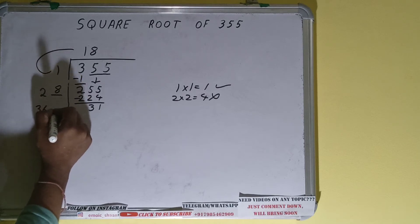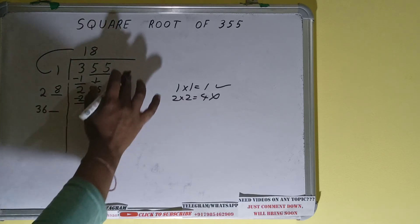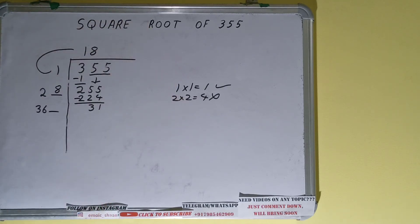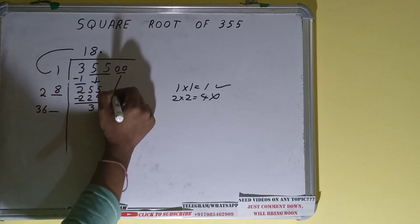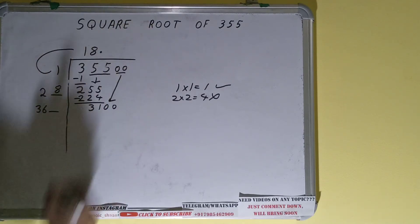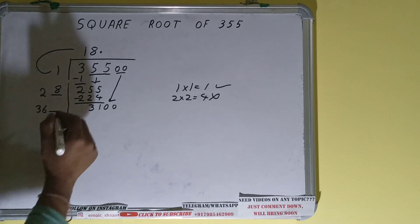Now 28 into 8 we did, so add both. 28 plus 8 will be 36, and keep one digit extra. This number we need to make it big so that we can divide, but we don't have any more pairs. So what we'll do is we'll put decimal. Once we put decimal we can bring down pair of zeros and number will become as 3100.